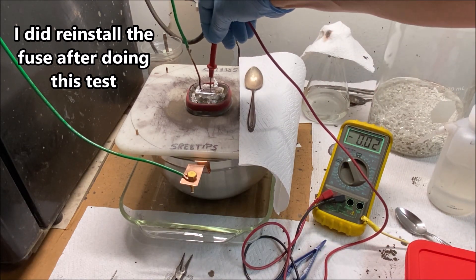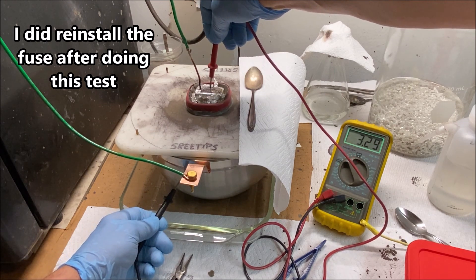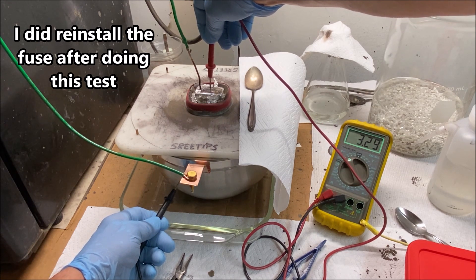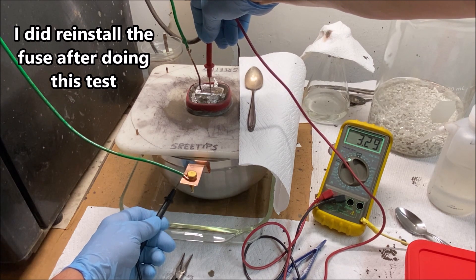Positive lead on the anode bar, negative lead on the bowl itself. Yep, that was it, I'm back up to 3.3 volts. So that fuse, that inline fuse, creates some resistance.